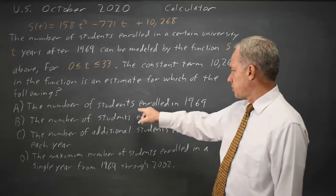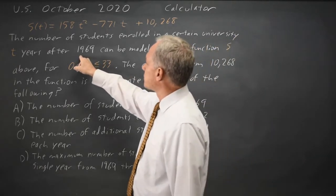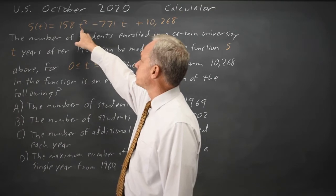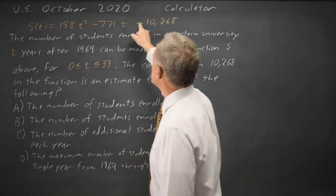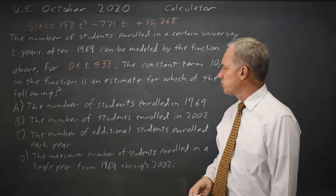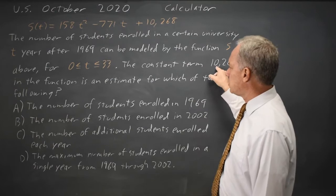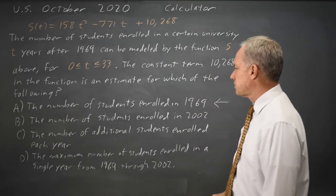Choice A, the number of students in 1969. 1969 is zero years after 1969. If I put in zero for T, I get zero minus zero plus 10,268. So our estimate for 1969 is 10,268, which is the number they're asking about. So that looks like the correct answer.